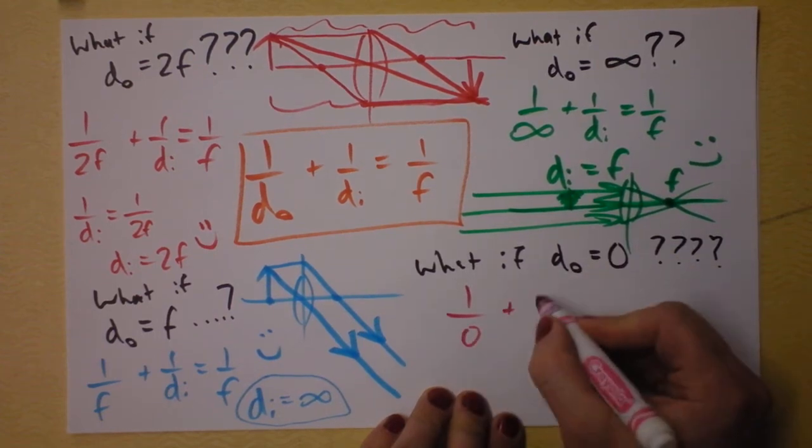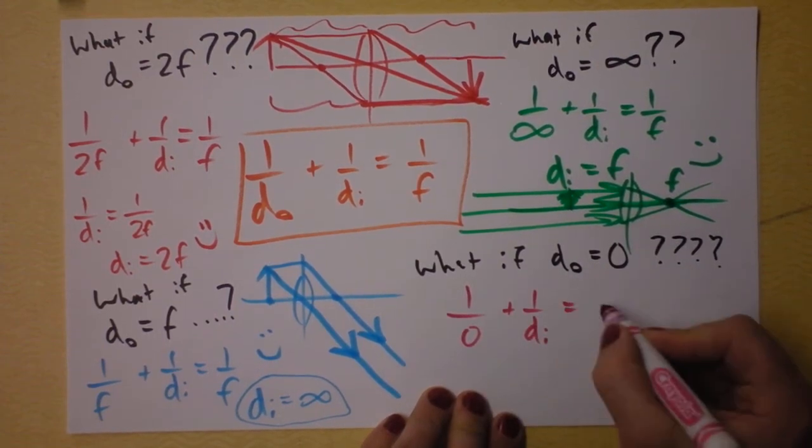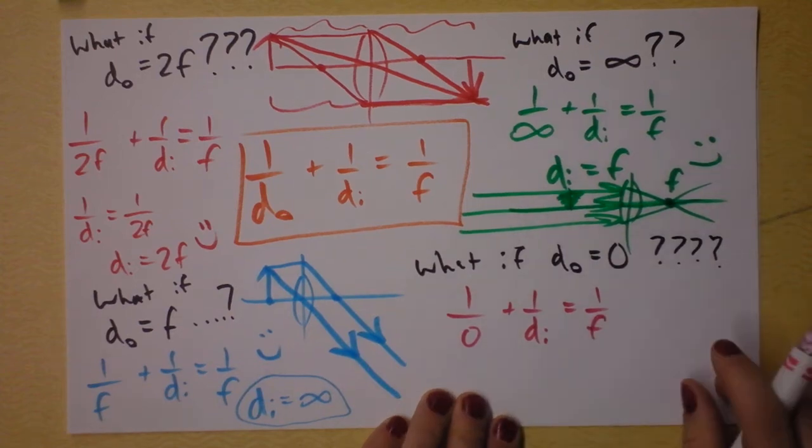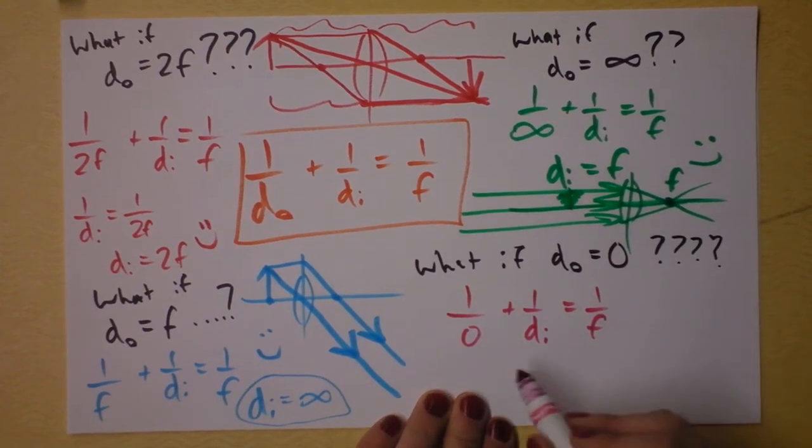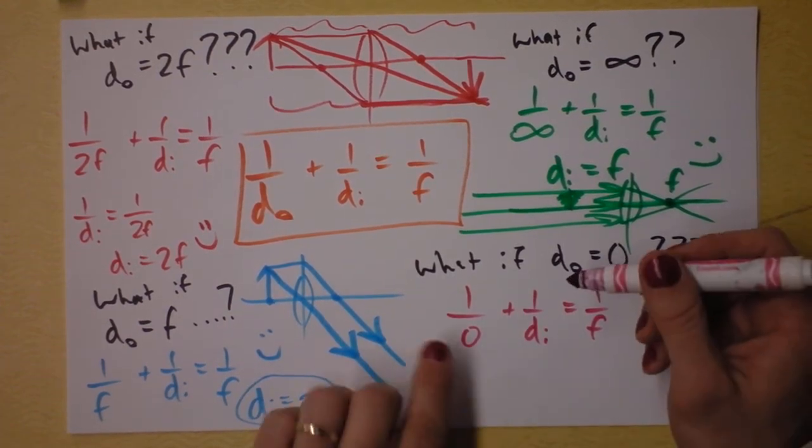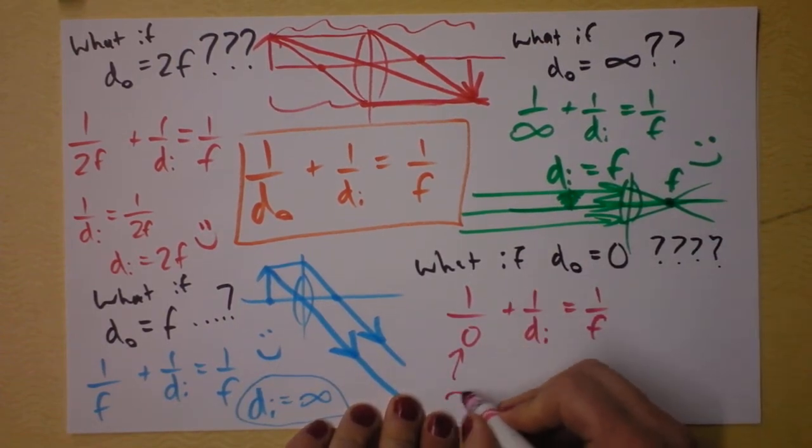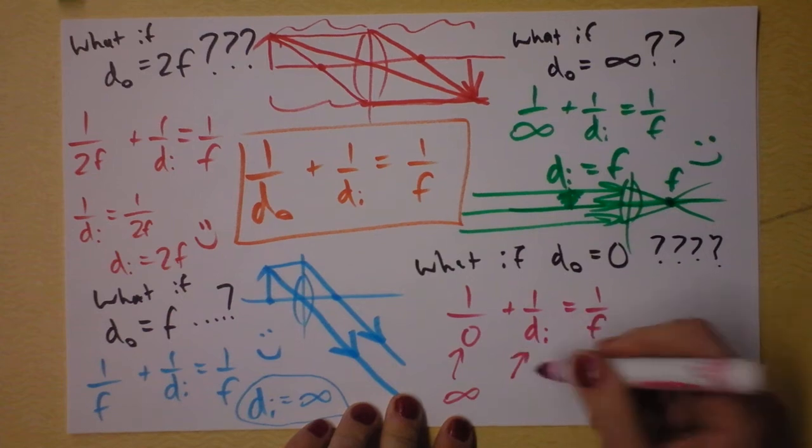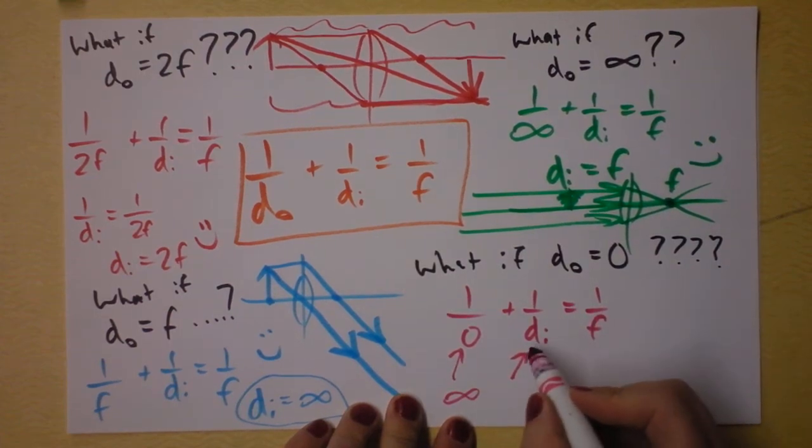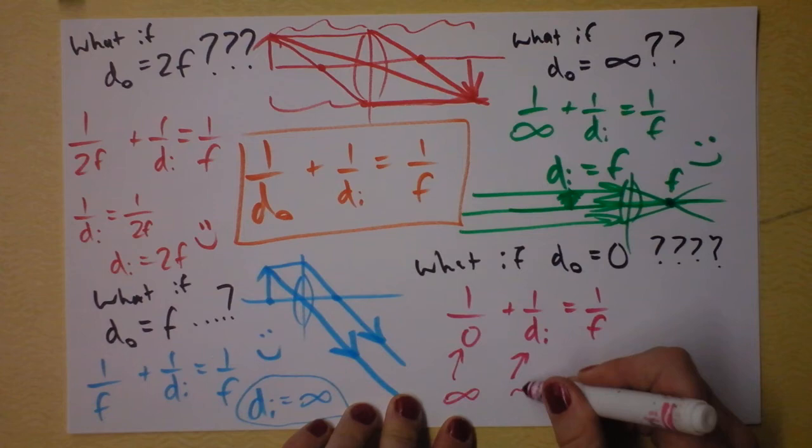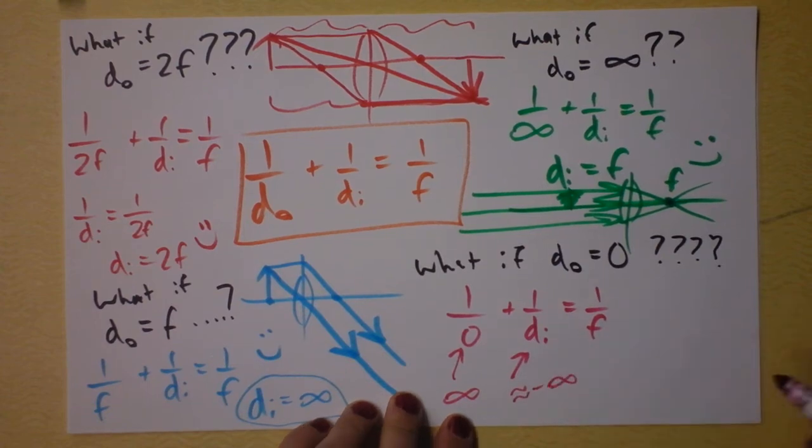If I get all up in this lens's face, I'm saying that the distance of the object is zero. I get 1 over zero plus 1 over di equals 1 over f. If I'm going to make this work out, well we're going to have to make an approximation. This is about infinity and this would have to be pretty close to negative infinity. So this needs to be about negative infinity. It's approximately negative infinity.